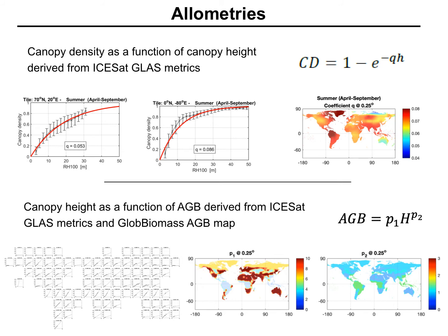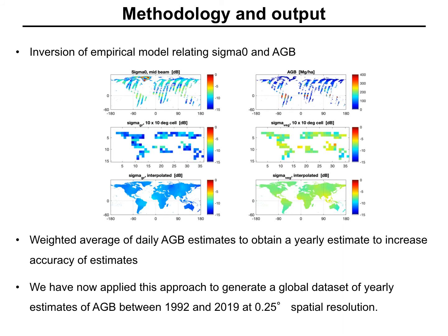So once we have set the two allometries, we can then take a daily observation of scatterometer observations — which would be the top left panel — estimate the two model parameters sigma-ground and sigma-veg, and we do this with self-calibration. Then we interpolate the measurements to avoid gaps in the coverage, which would be the bottom row of our illustration, and invert the water-cloud model together with the allometries to generate a daily map of above ground biomass.